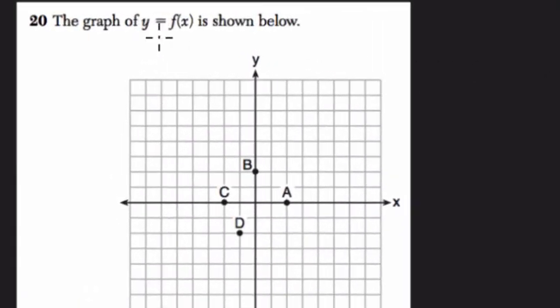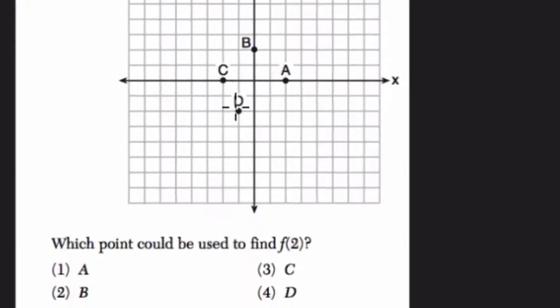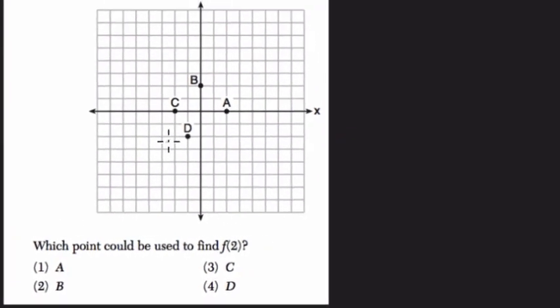Alright, so let's read this. The graph of y equals f of x is shown below. So here's this graph, and notice it's got these four points. Which point could be used to find f of 2? So here we have some function. We're not sure exactly what it is. They're not asking us to define the function. They're asking us to explain how these points relate to function notation.